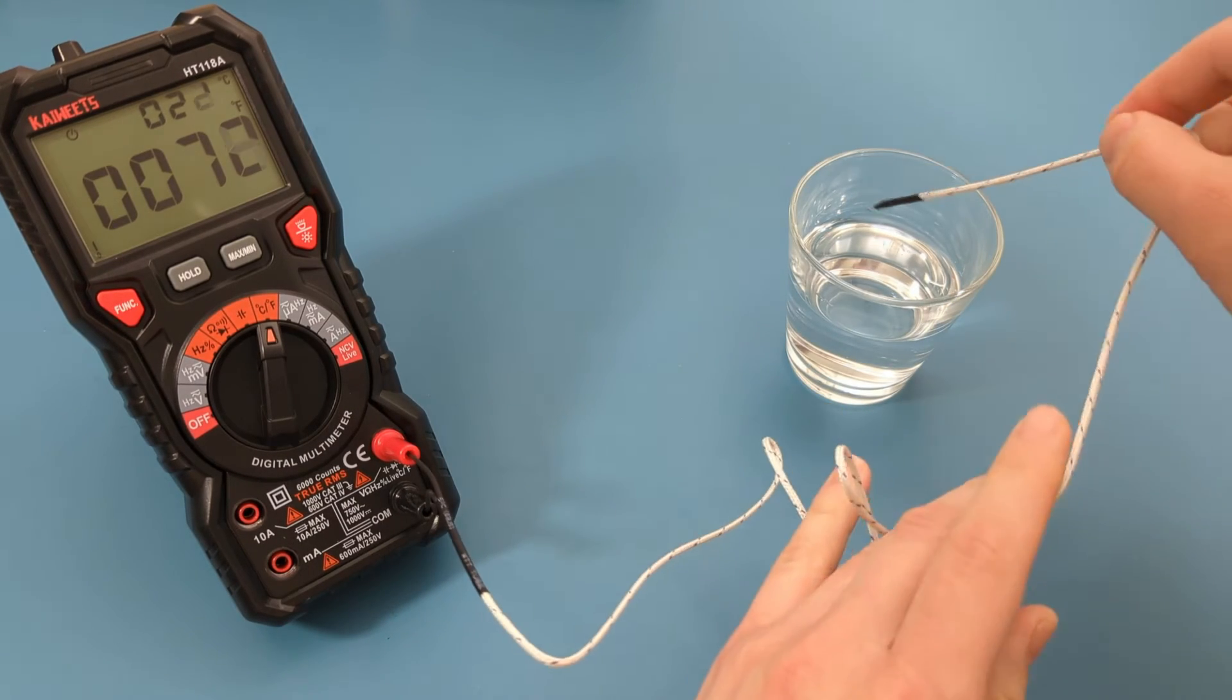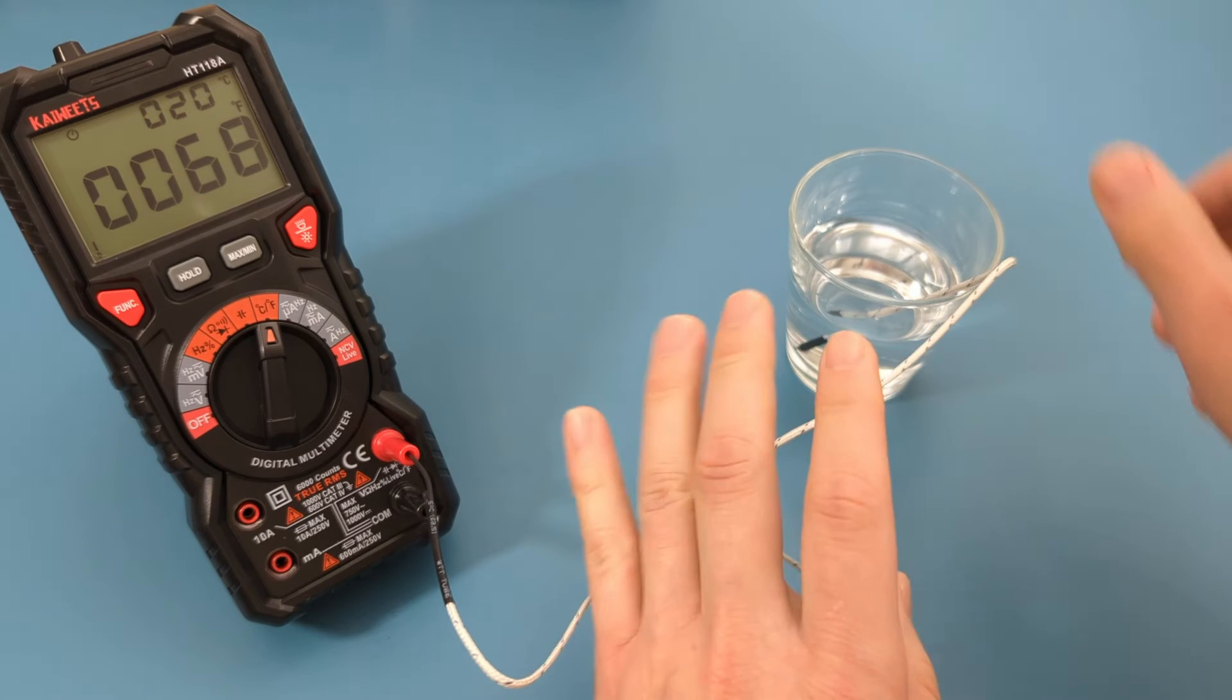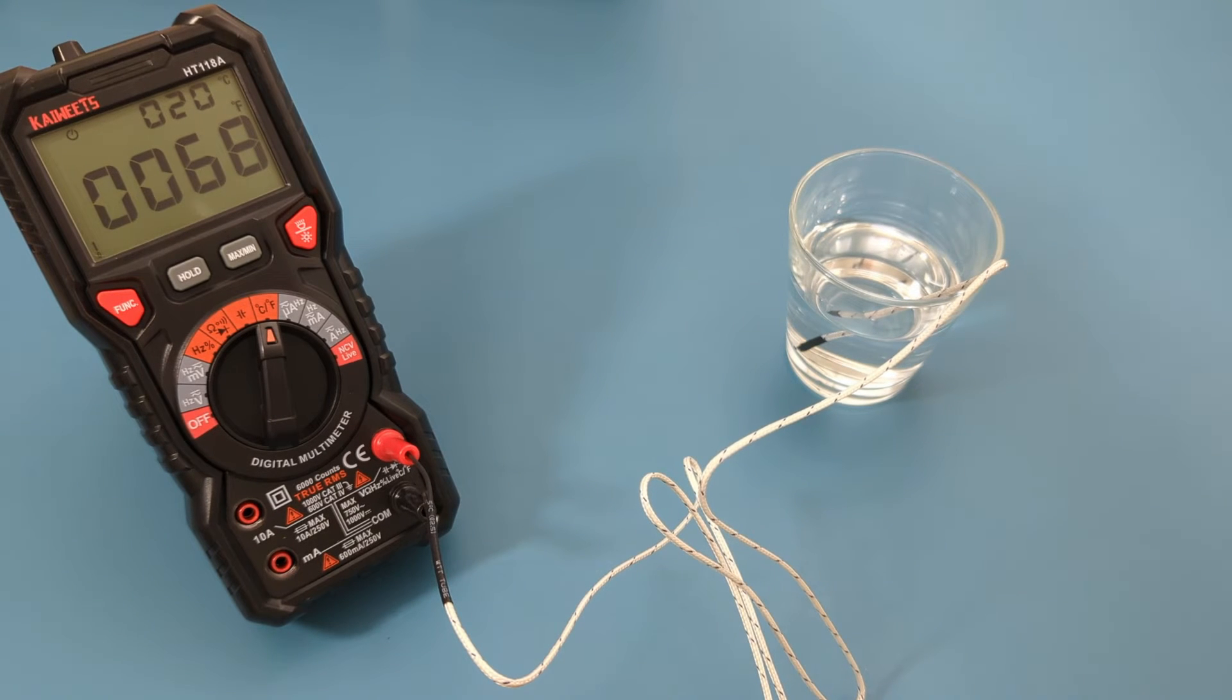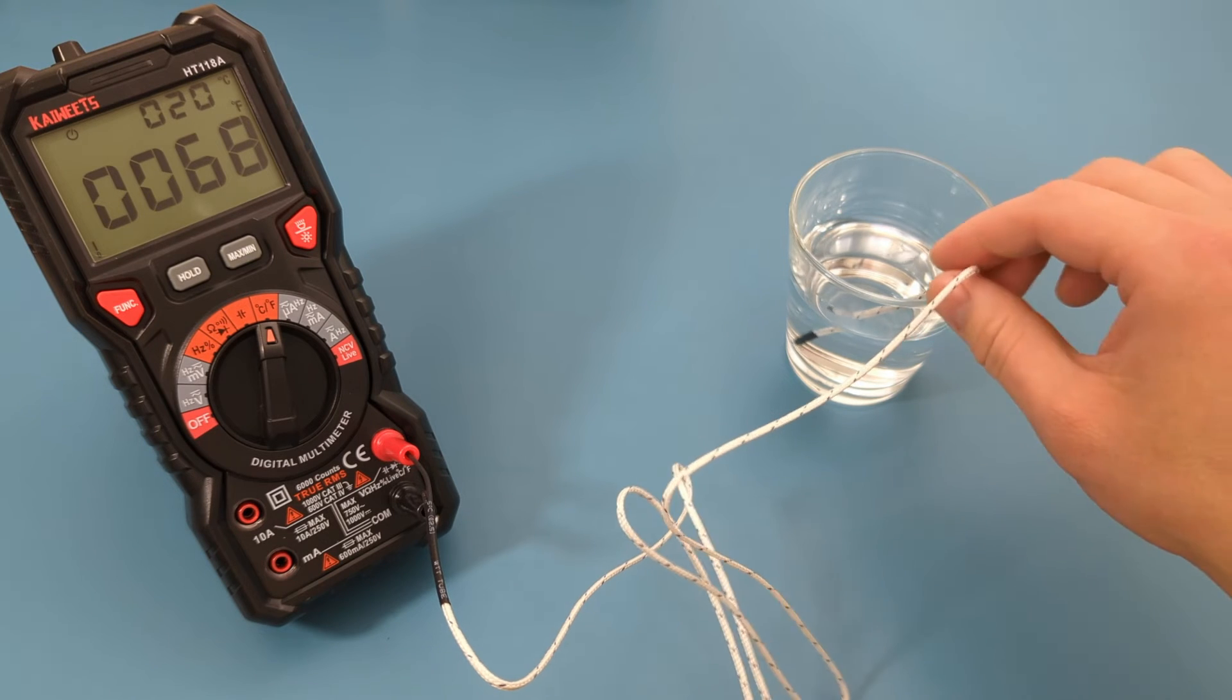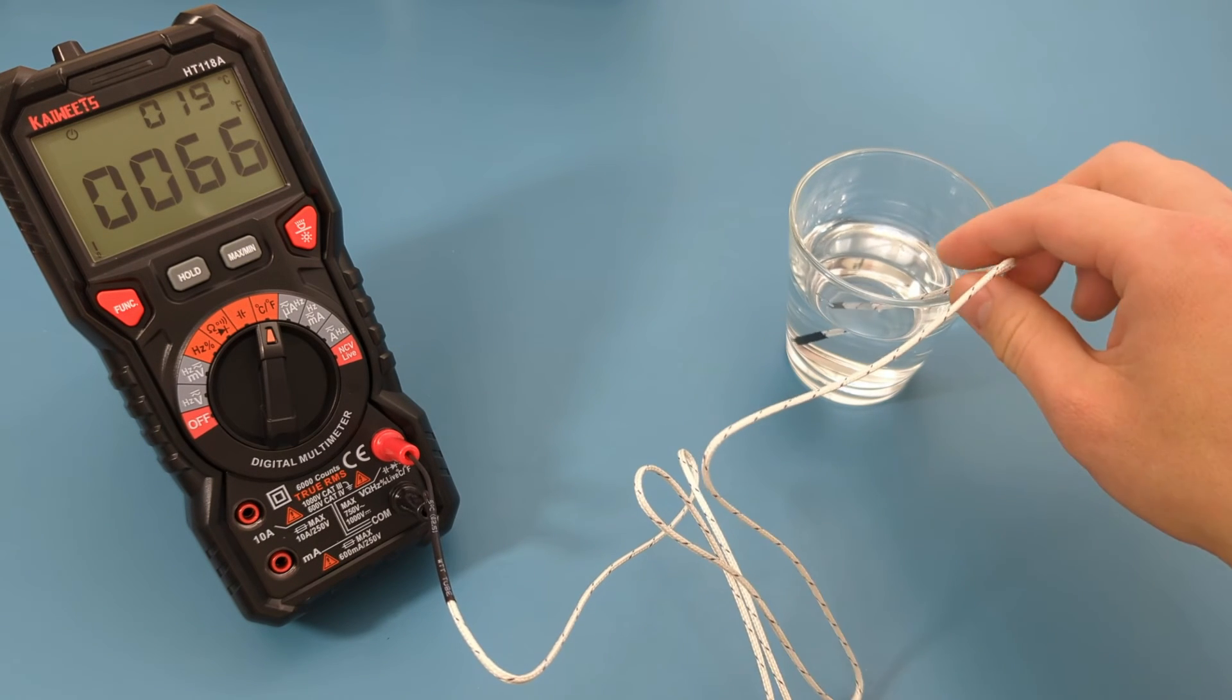Drop the wire in the water. The measurement indicates a temperature of 68 degrees Fahrenheit or 20 degrees Celsius. Given that this is room temperature water, the result is good.